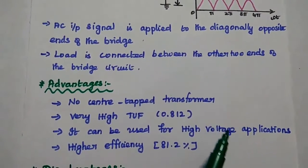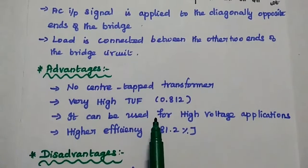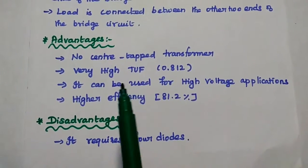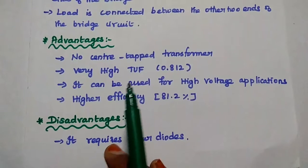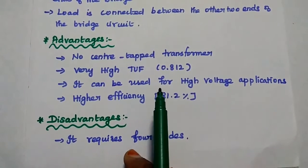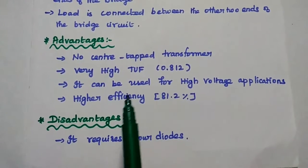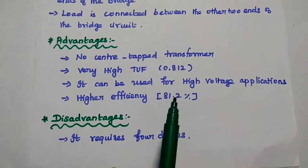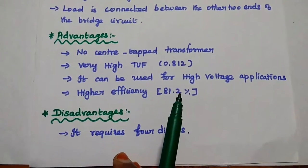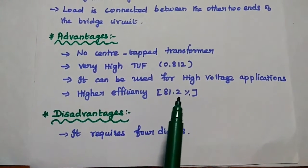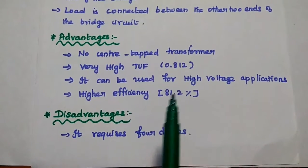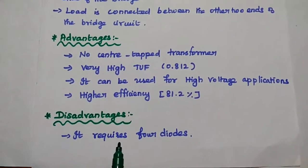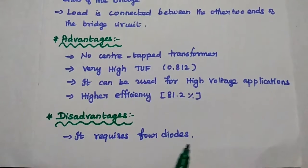Advantages of the bridge rectifier: no center tap transformer is used in the circuit. It has a very high transformer utilization factor. It can be mainly used for high voltage applications. Its efficiency is very high at 81.2%. The major disadvantage is that it uses four diodes.